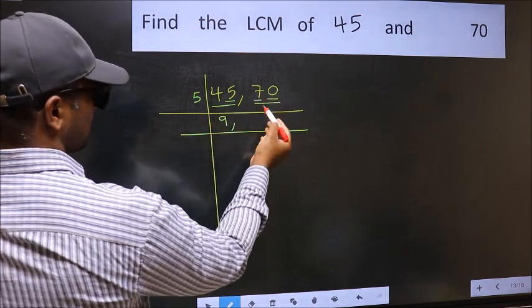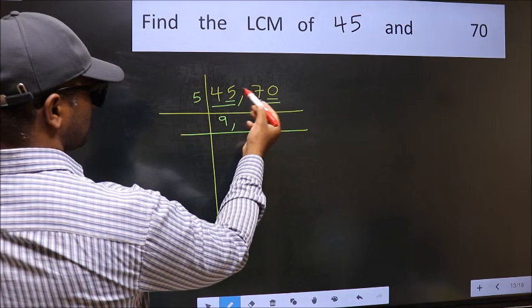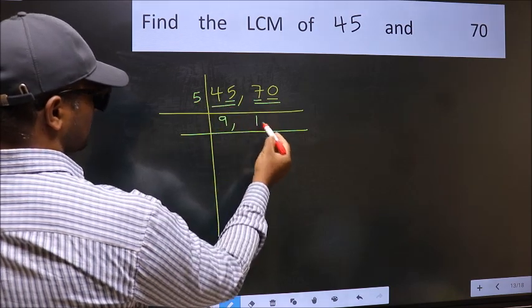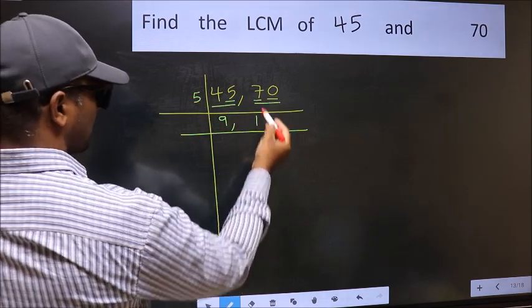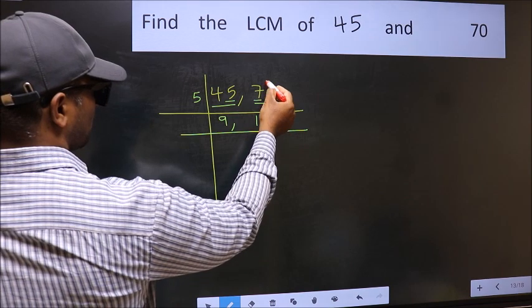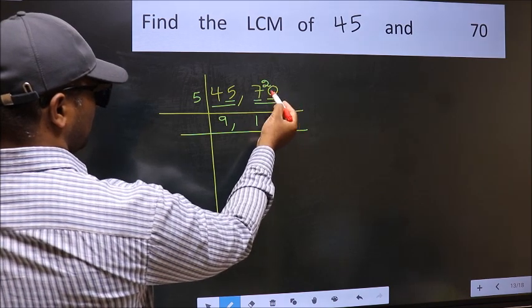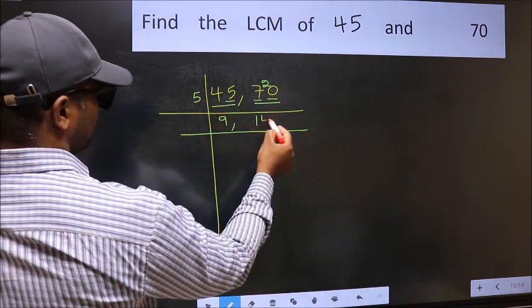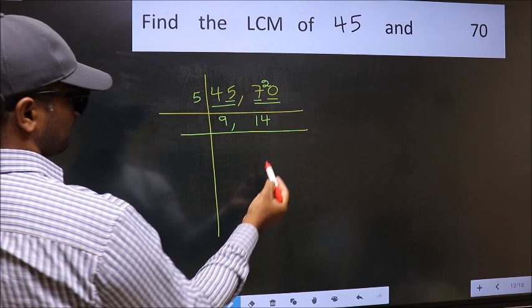After dividing 70 by 5, the first digit is 7. A number close to 7 in the 5 times table is 5 once, which is 5. 7 minus 5 is 2, carry forward to get 20. When do we get 20 in the 5 times table? 5 fours are 20. So 70 divided by 5 gives 14.